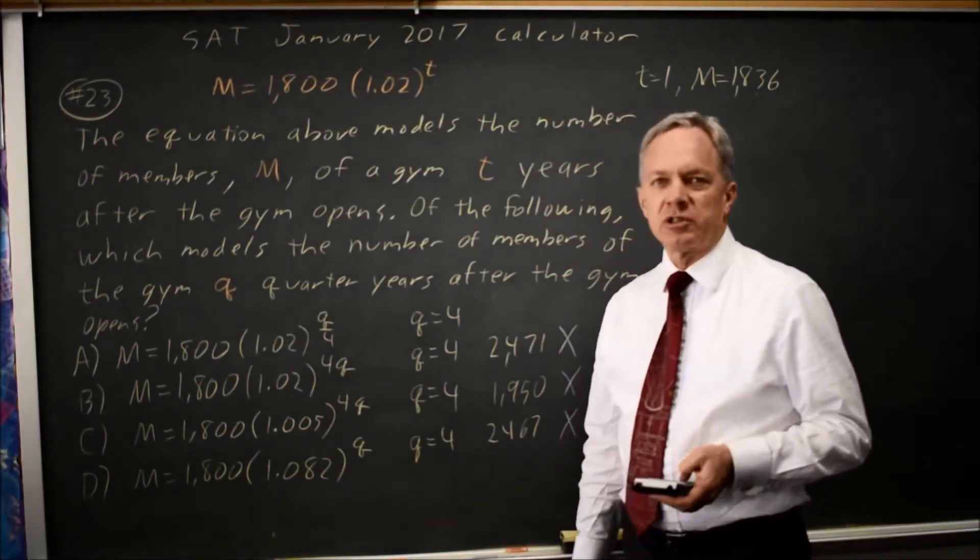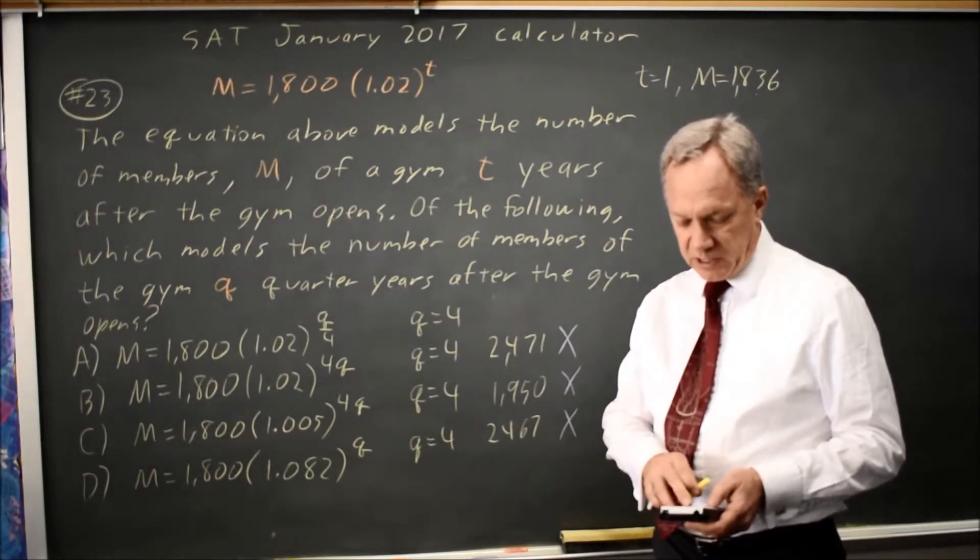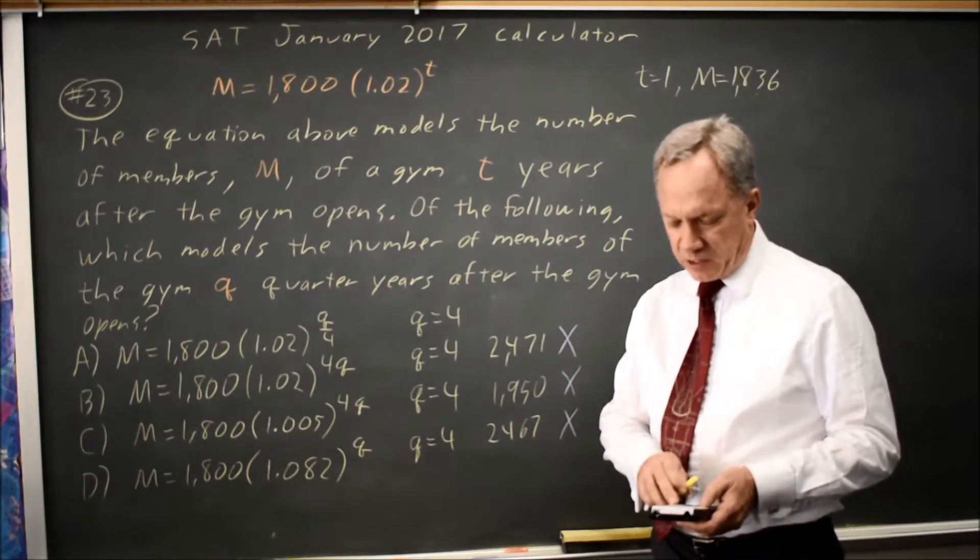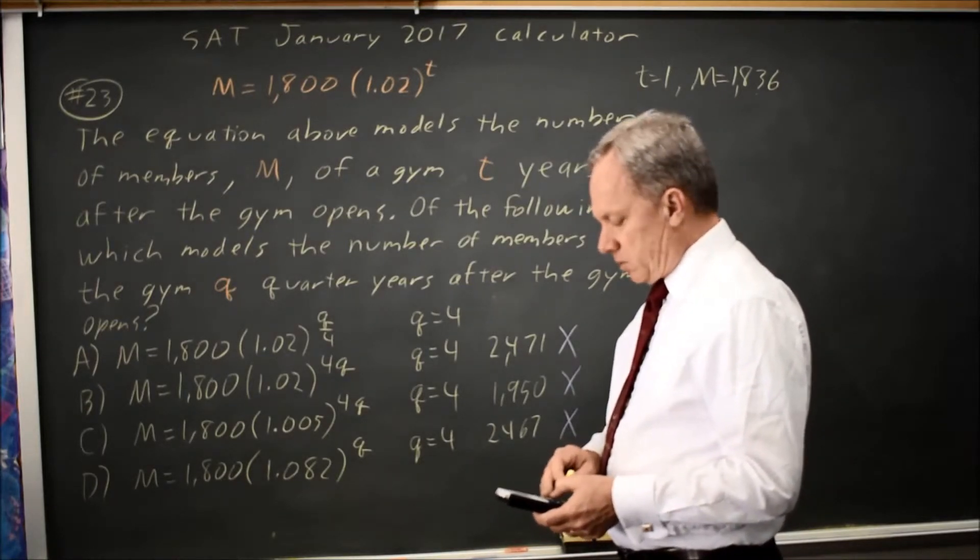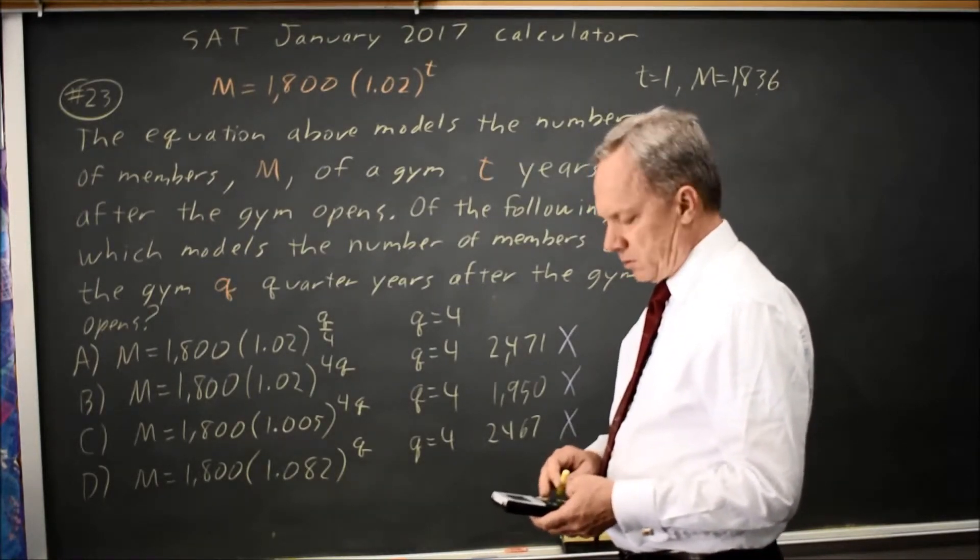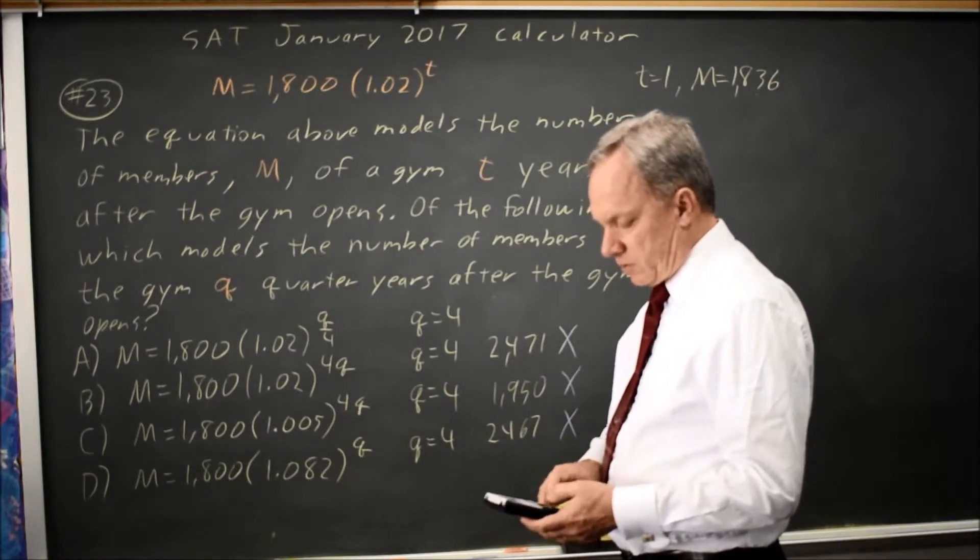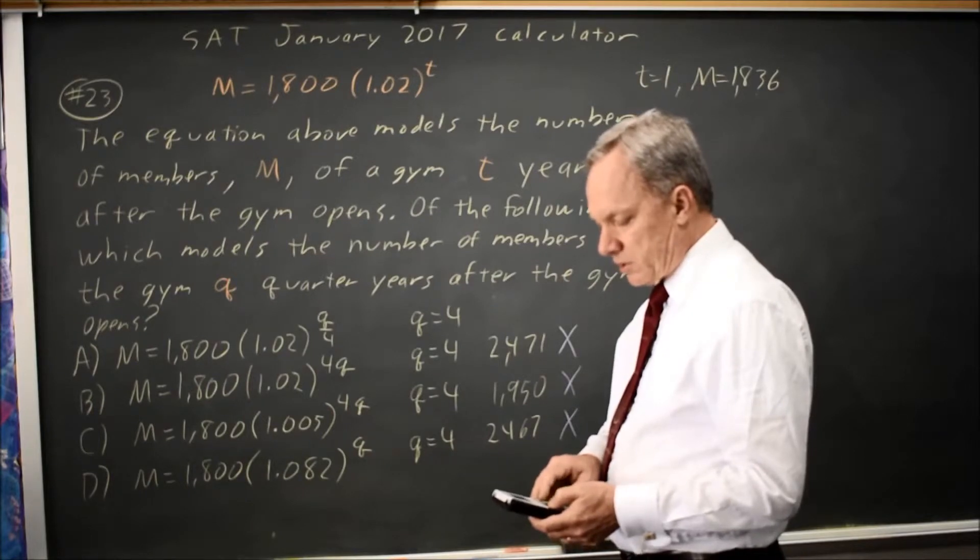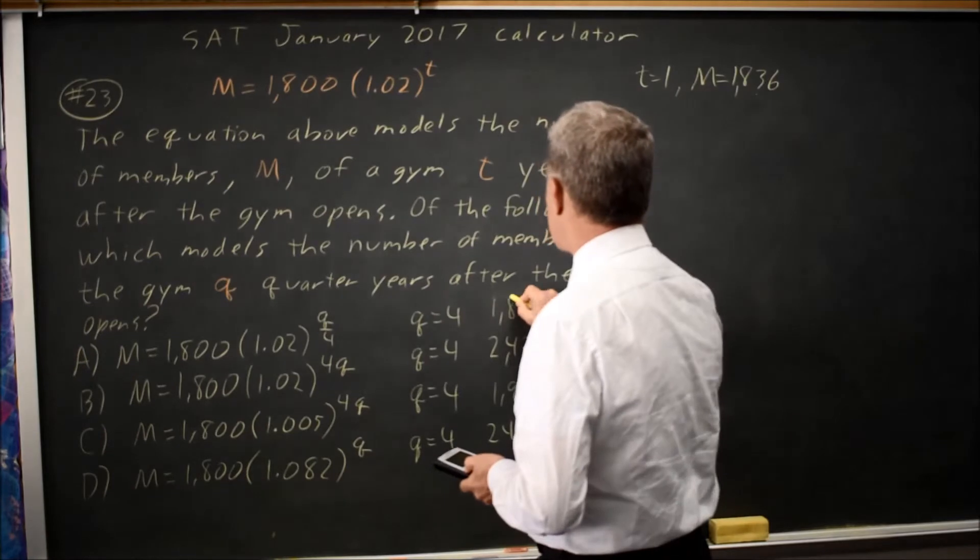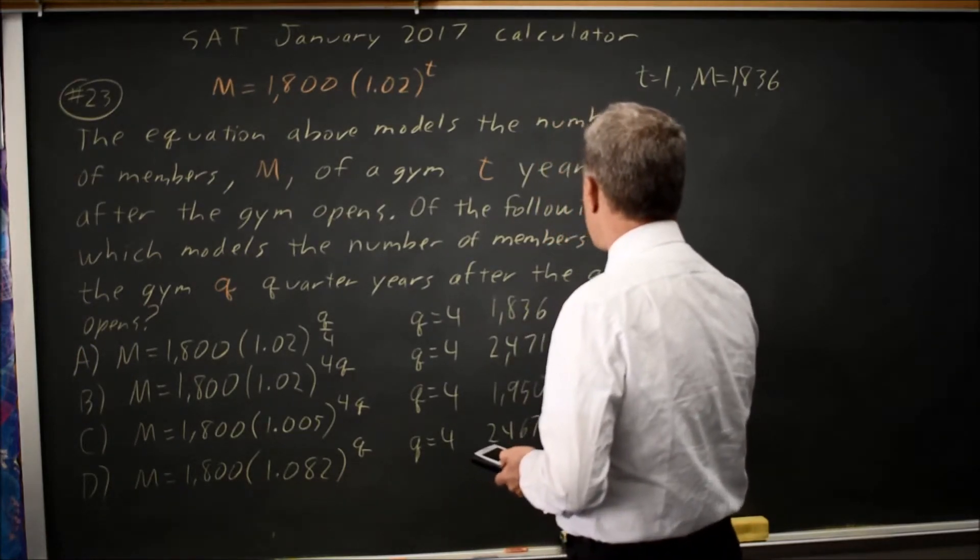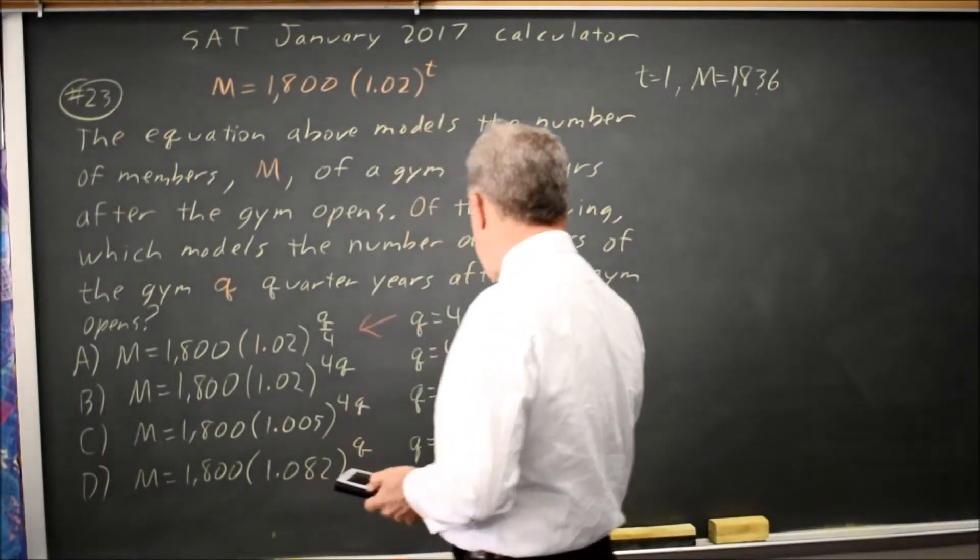I skipped choice A because I wanted to look through the others, and I suspect that would be right. If I put in 1800 times 1.02 to the q over 4 and look at 4 quarters, I get 1836, and that does match, so choice A is the correct answer.